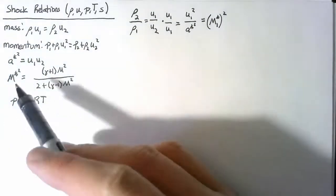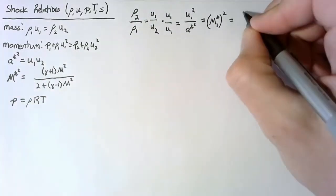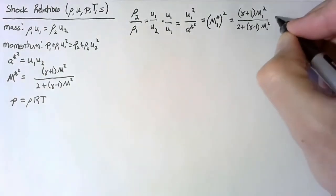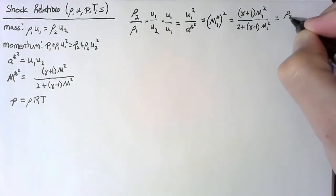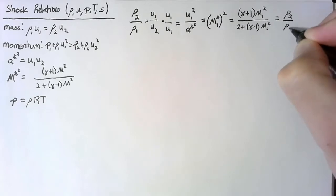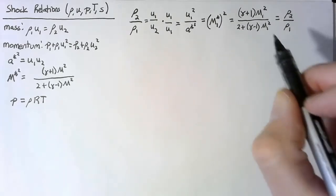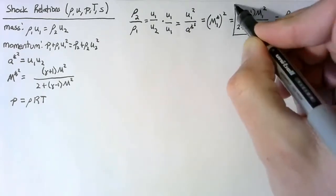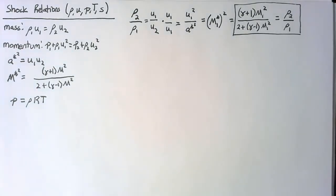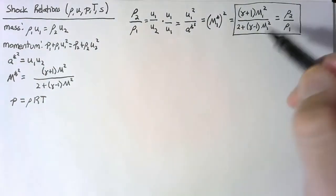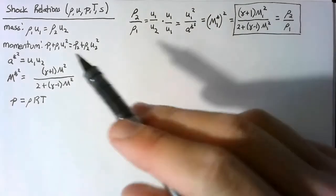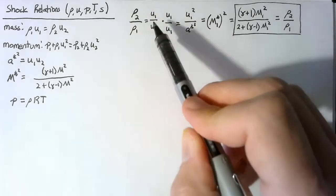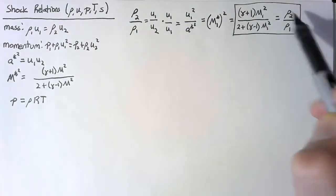So what we found here is a relationship of the densities before and after the shock based solely on the Mach number in front of the shock — and we had an equation for M*². This is the sort of thing we're going to find for each of these variables. Now once we have ρ₂/ρ₁, we implicitly have u₂/u₁ — it's just the inverse of this.